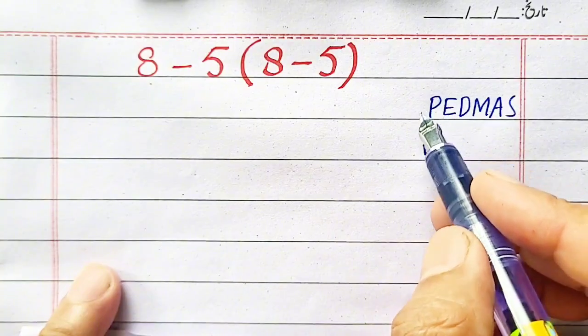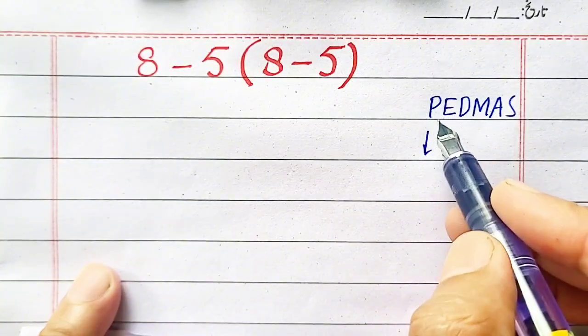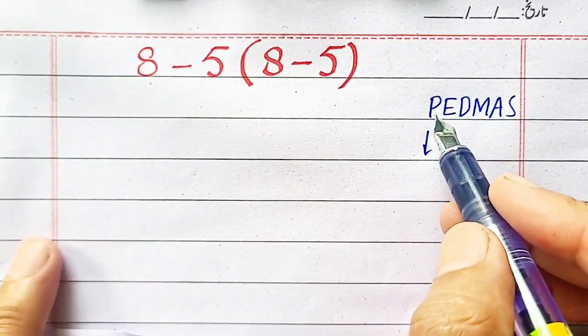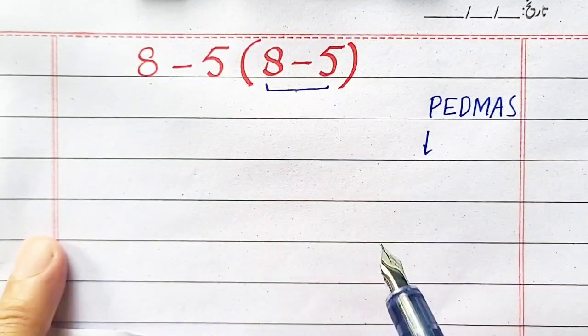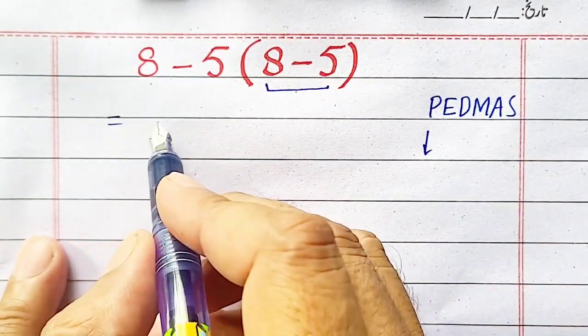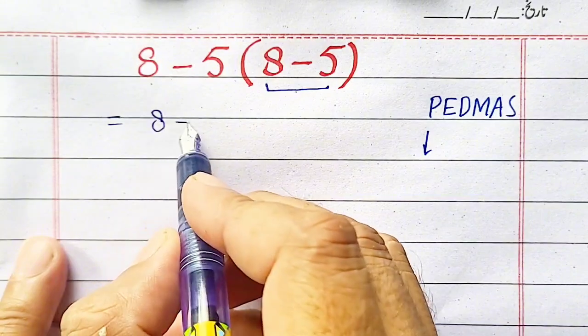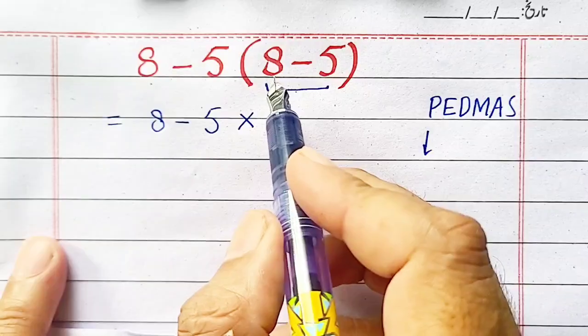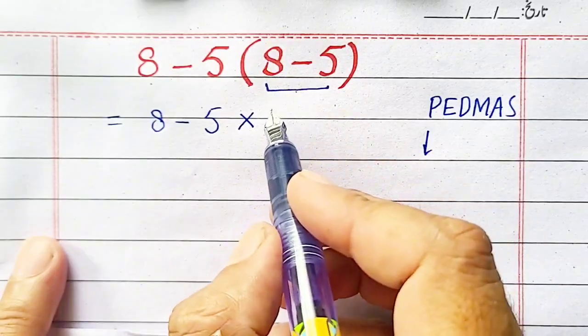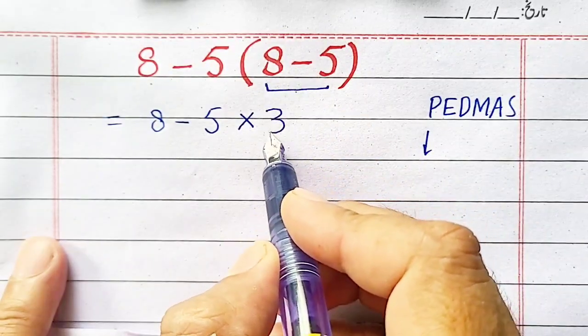So first of all, we should solve the parentheses. That means 8 minus 5, which equals 3.